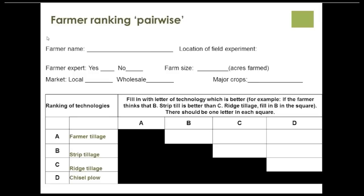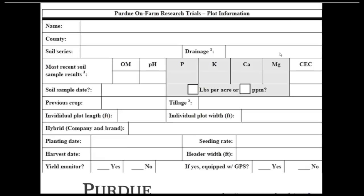Another systematic way to support farmers in evaluating is the Pepsi versus Coke ranking — most people find it easy to compare two things at once. You have your farmer's current tillage practice as option A, and then option B might be strip tillage. The farmer can think: is B or A better? And then is C — ridge tillage — better than their current practice? It's easy to fill out, though a little more challenging to interpret, but there are nonparametric methods for pairwise ranking.